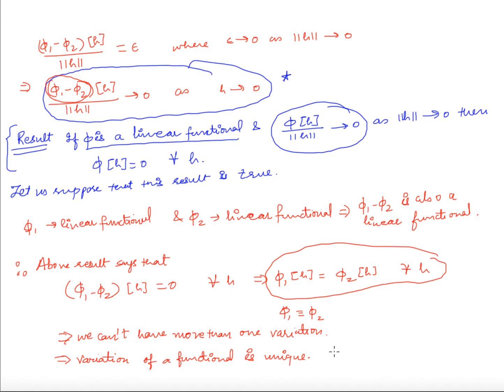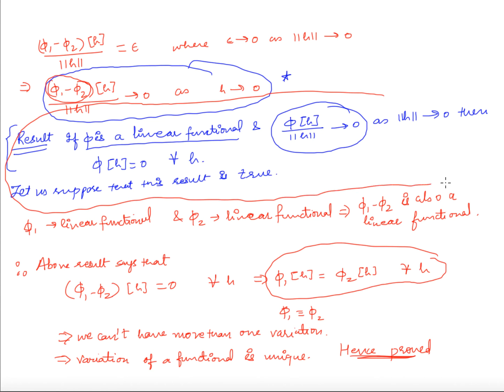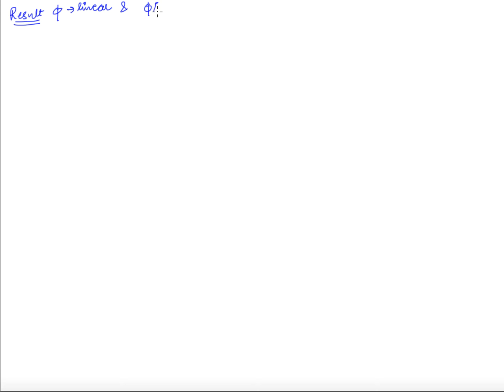The only thing left is to prove the auxiliary result we used. We need to prove: if φ is a linear functional and φ(h)/‖h‖ → 0 as ‖h‖ → 0, then φ(h) = 0 for all h.